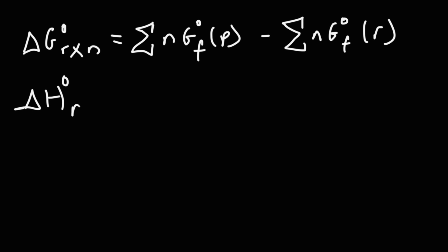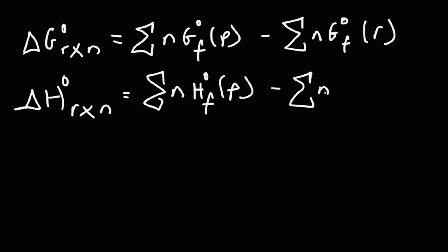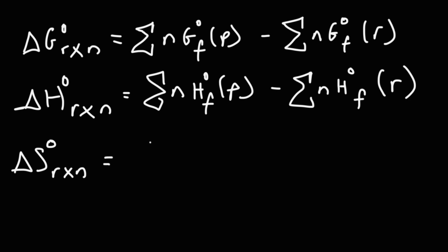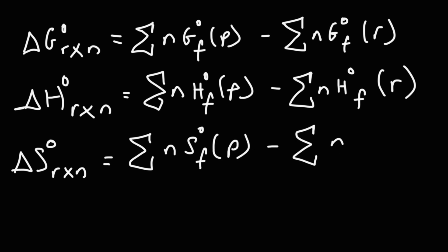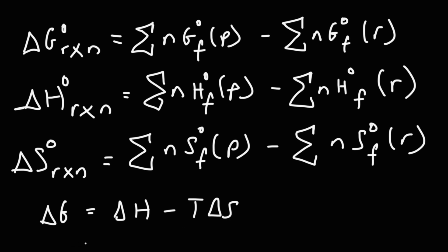You can calculate the enthalpy change of a reaction using a similar formula: the sum of the standard enthalpies of formation for the products minus the sum of the standard enthalpies of formation for the reactants. You can also calculate the entropy change of a reaction in the same format. Typically, if you have thermodynamic table data, you would use that data to find delta H and delta S, and using those you can calculate delta G. You could also use the table to get delta G of the reaction directly.